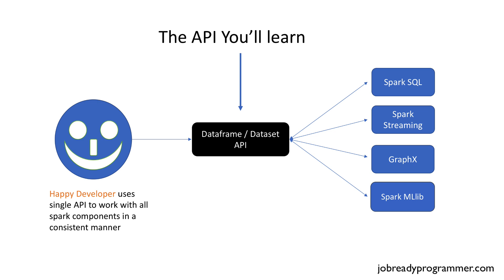Now, out of the entire course, this has to be my favorite slide, and it's not because of this funky-looking smiley face that I created. This slide explains a lot — a happy developer is a developer that uses a consistent API to interact with all of the different components of a particular system, and Spark really nails it. You can interact with Spark SQL, Spark Streaming, GraphX, as well as MLlib by utilizing a consistent API using the DataFrame and Dataset. A DataFrame is a specific kind of Dataset, and you can use the same API to interact with these various components.